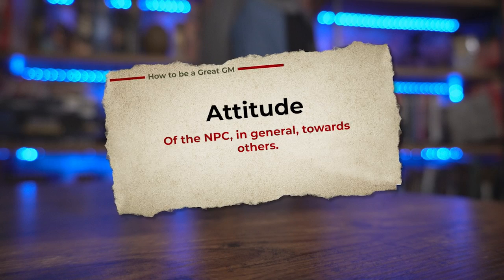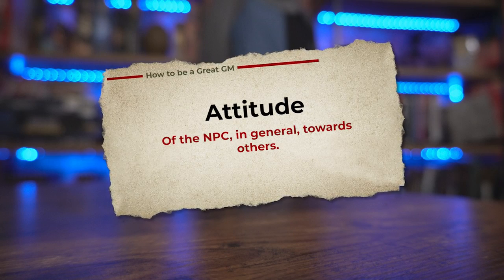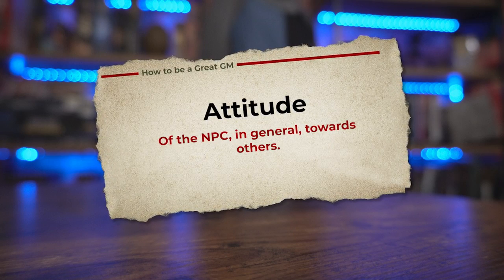With our city guard, let's say their goal is to get free stuff from taverns and pubs on their patrol route. They're using their occupation to further their personal goal of getting free stuff. This leads us to the A of OGAS, which is Attitude. The attitude of the NPC is their worldview — how they are in 99% of situations.